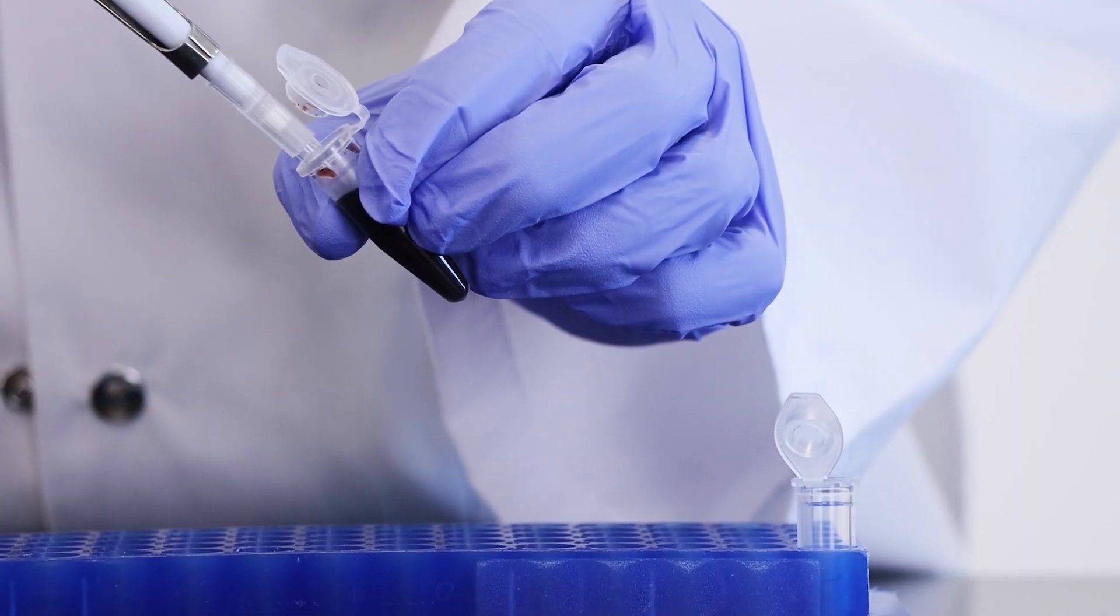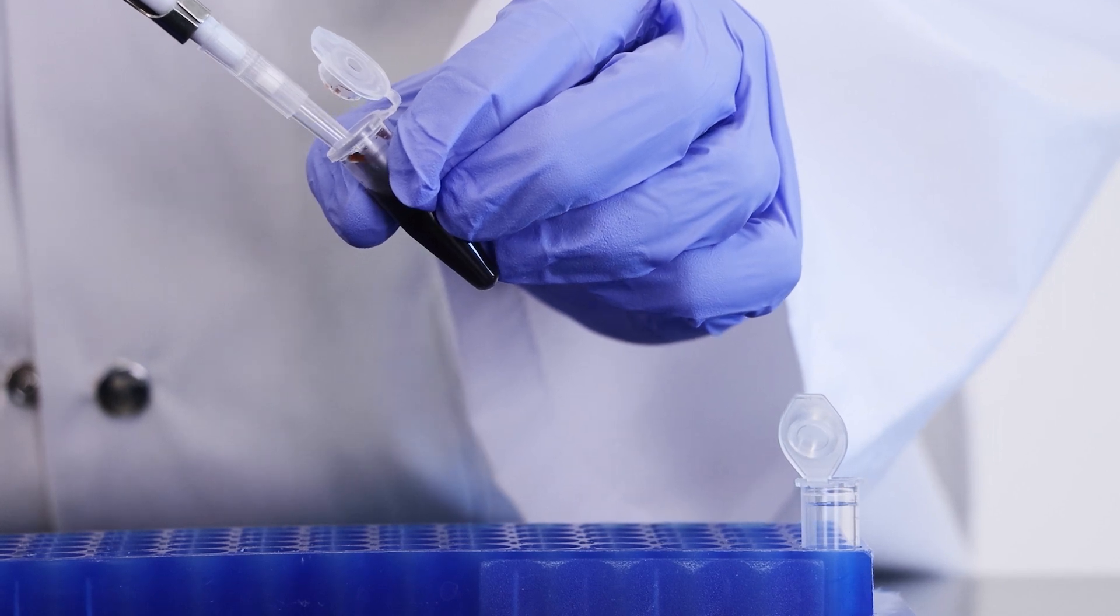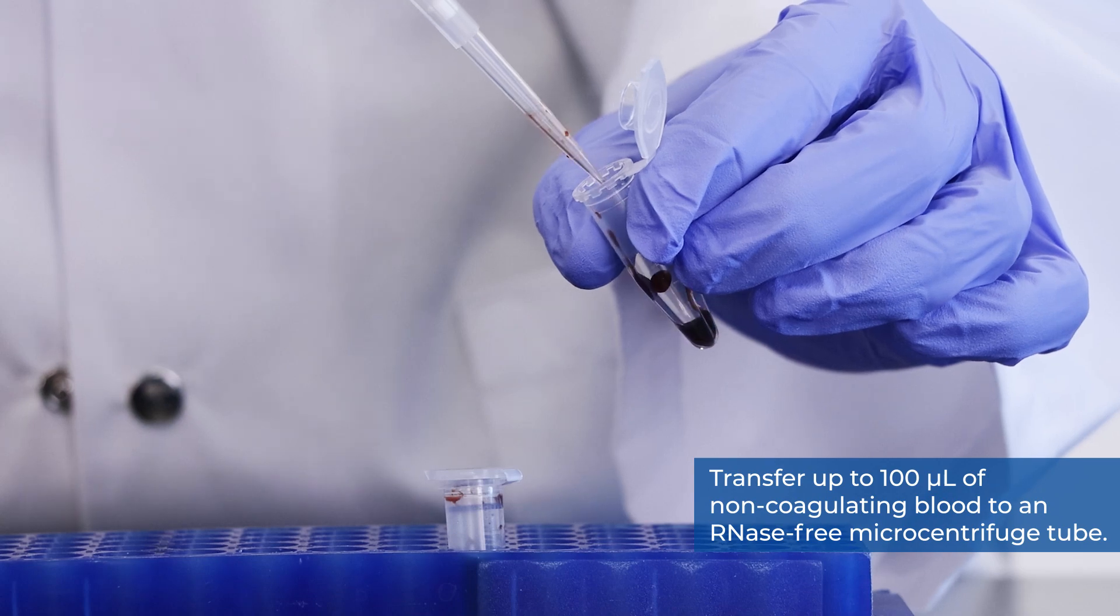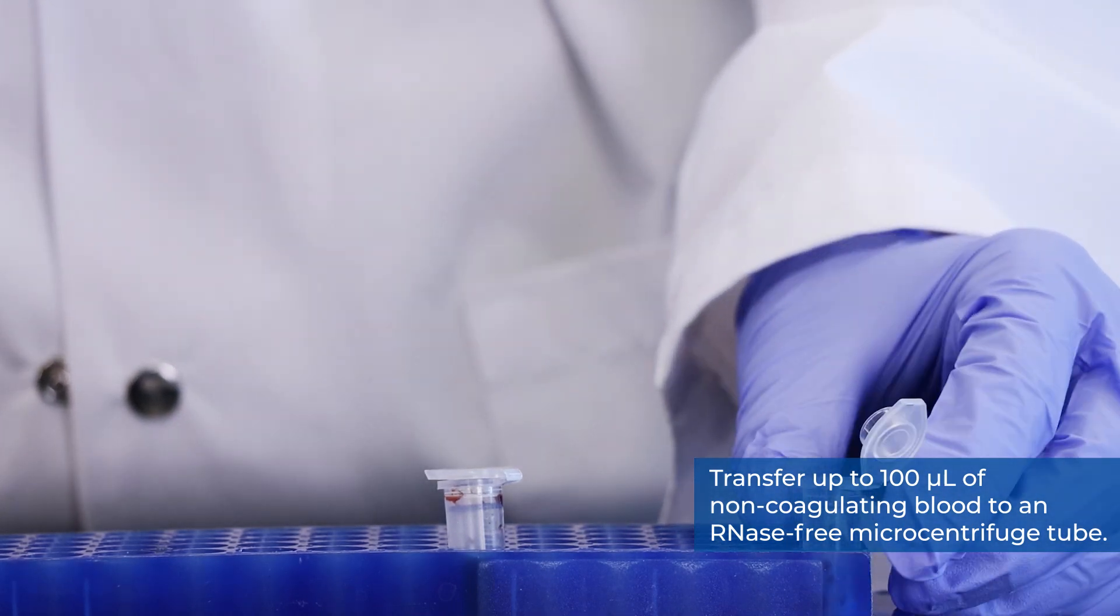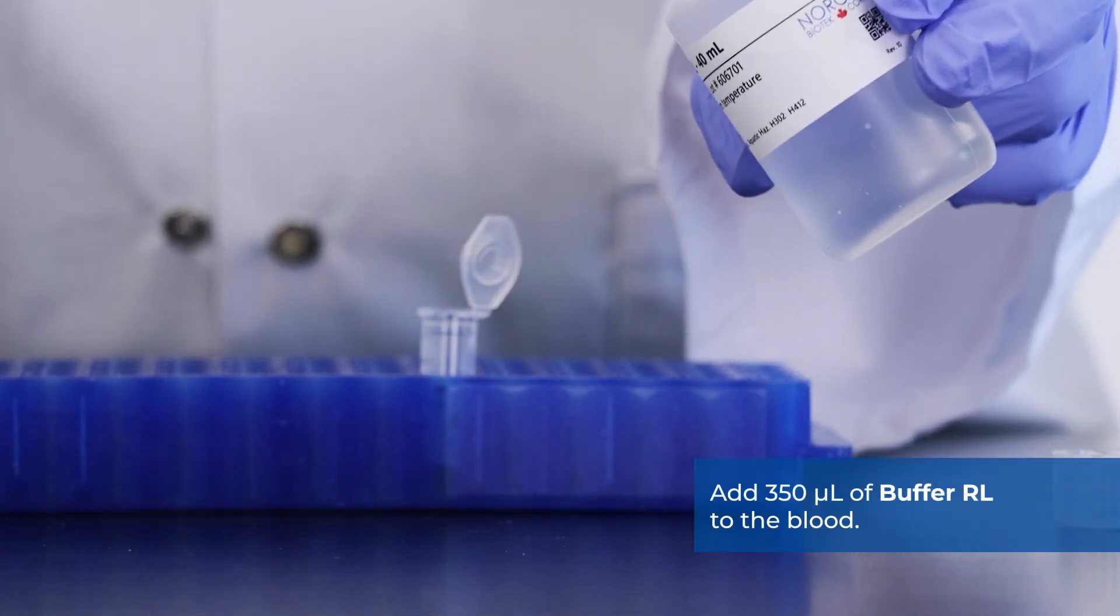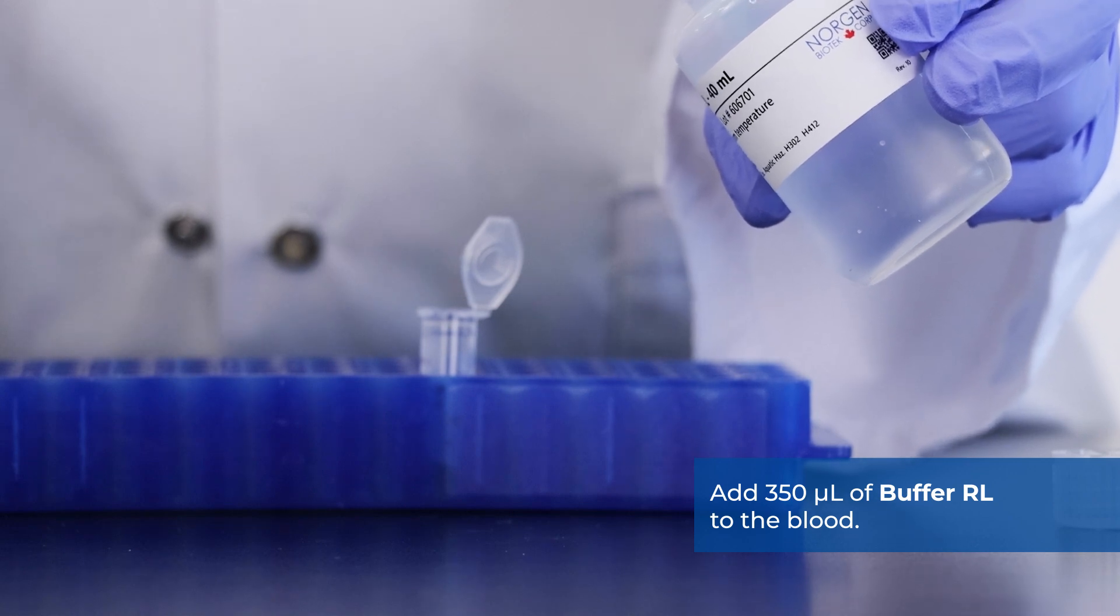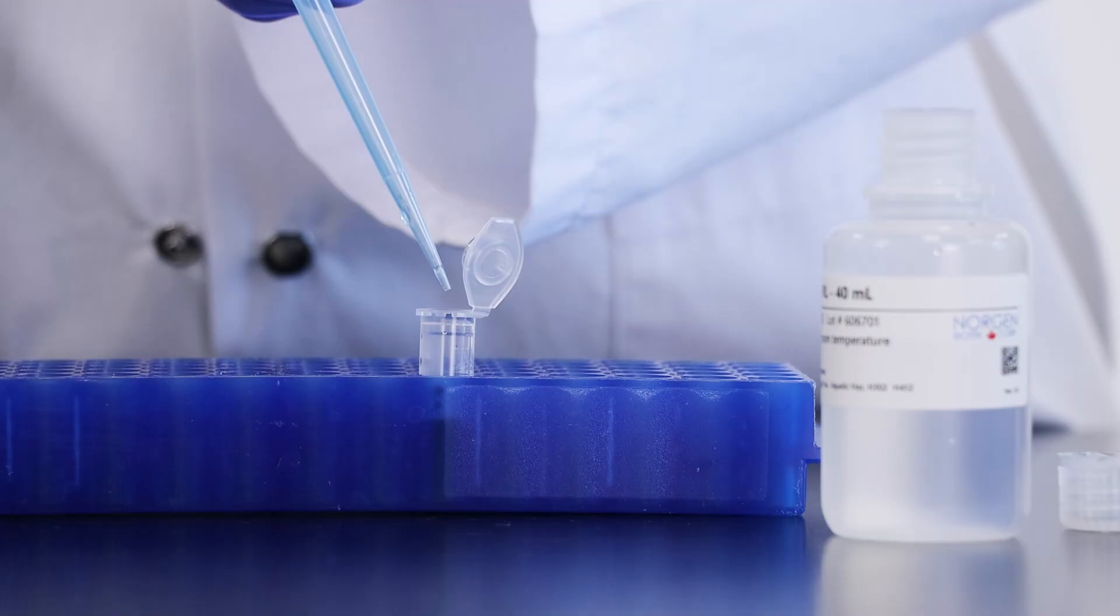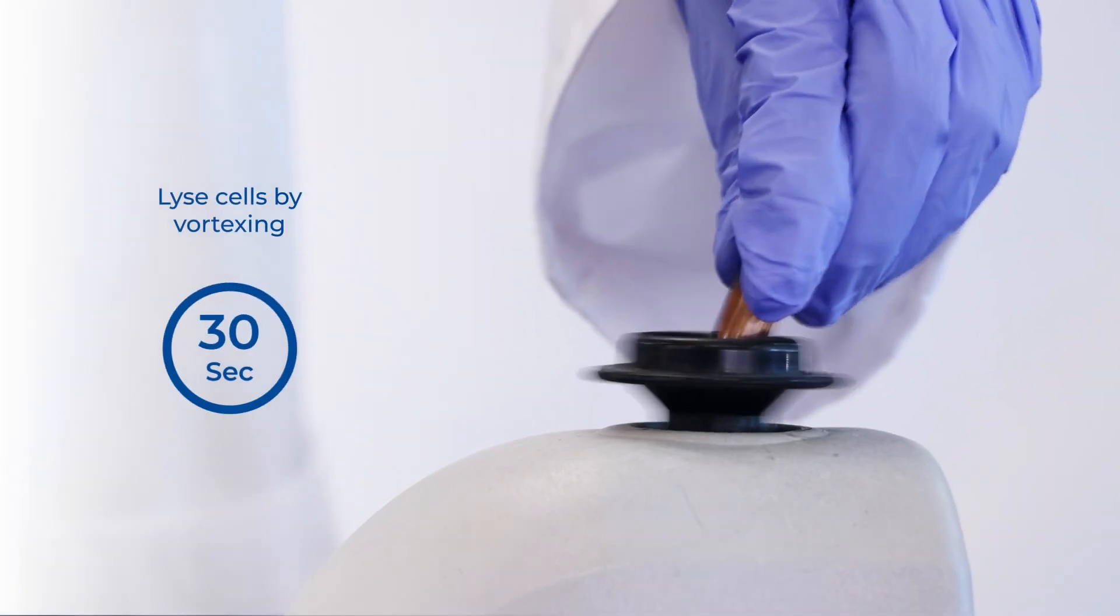Thirdly, we will demonstrate cell lysate preparation from blood. Transfer up to 100 microliters of non-coagulated blood into an RNase-free microcentrifuge tube. Add 350 microliters of buffer RL to the blood. Lyse cells by vortexing for 30 seconds.